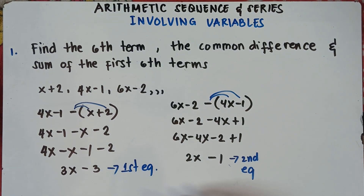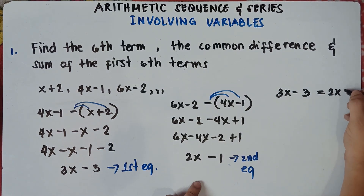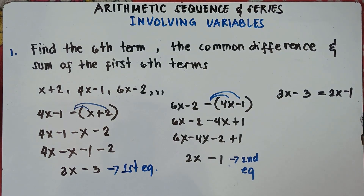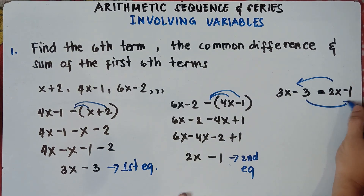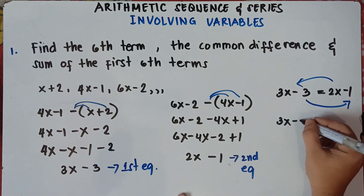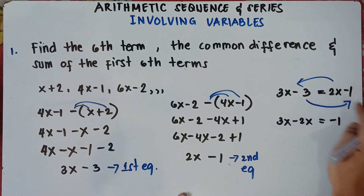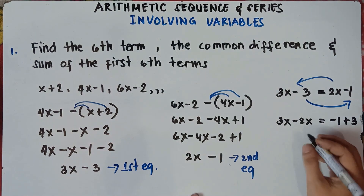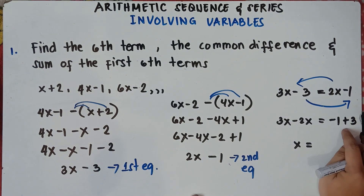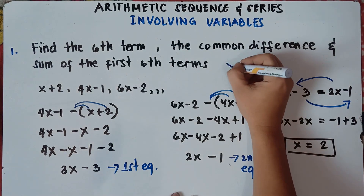Now we equate the two equations: 3x minus 3 equals 2x minus 1. To get the value of x, isolate x — transpose 2x from the right to the left and transpose negative 3 from the left to the right. Remember: once you transfer a term across the equal sign, you always change the sign. So 3x minus 2x equals negative 1 plus 3, giving us x equals 2.